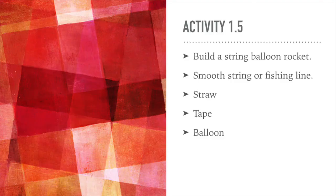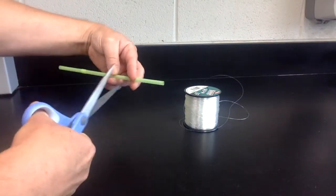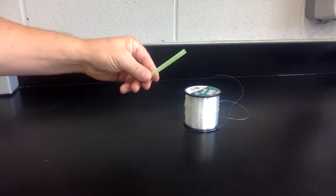For activity 1.5, you'll need a smooth piece of string, some straw, a balloon, and some tape.